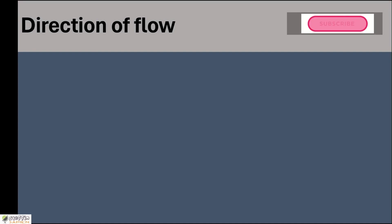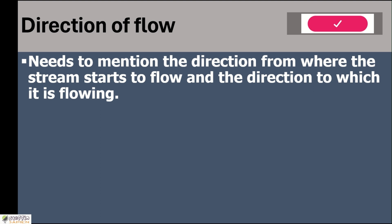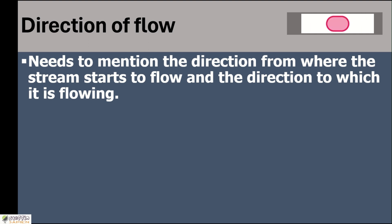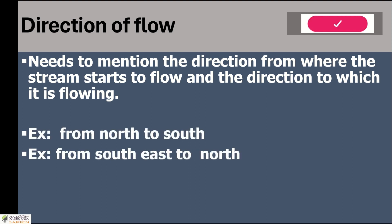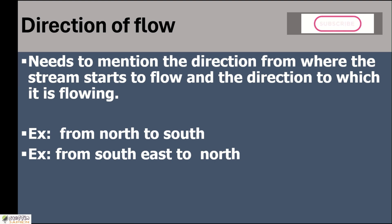Direction of flow means to identify the direction of the flow of rivers. When we write the direction of flow, we need to mention the direction from where the streams are starting to flow and the direction to which they are flowing. So there are two things: the from direction and the to direction. For example, from north to south, or from south to north.